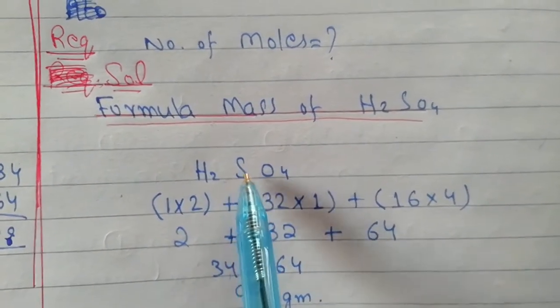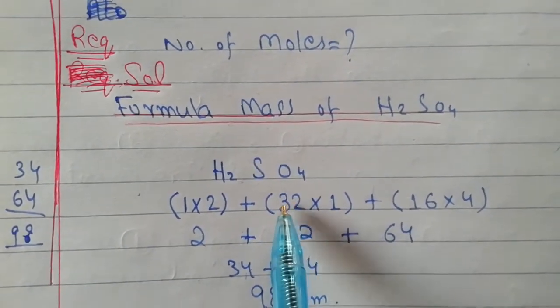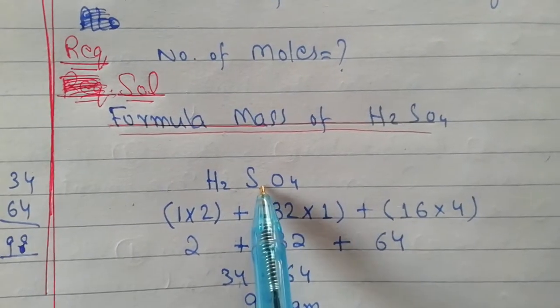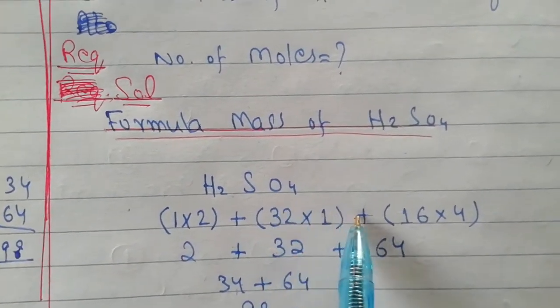Plus function. Now we have sulfur, atomic mass is 32 from periodic table. This multiply will be one, so 32.